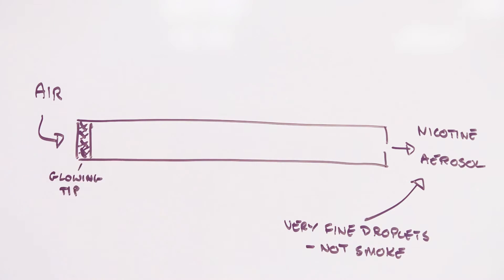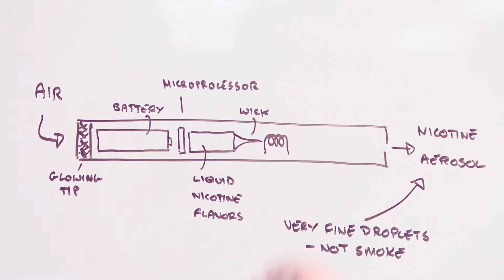E-cigarettes use a liquid such as glycerin into which ingredients like nicotine and even flavorings are dissolved. When you take a puff, this liquid is vaporized in a hot wire and forms a cloud of fine particles that, when inhaled, penetrate deep into your lungs.